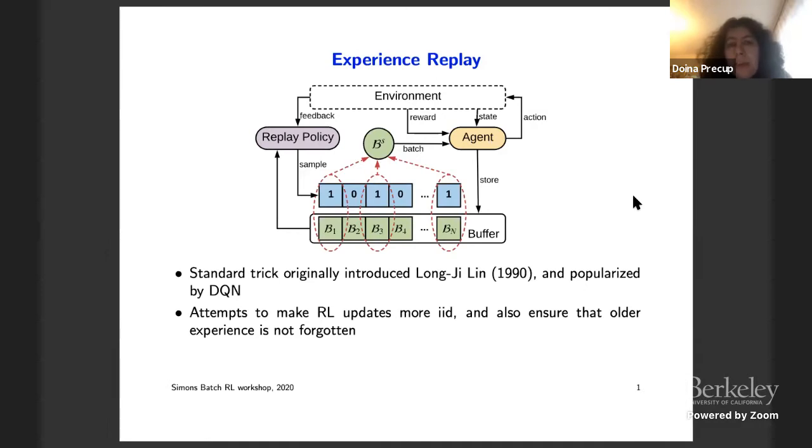In some sense, this is a trick that was initially introduced by Long Jiren back in 1990. He was a roboticist, and he just wanted to make sure that data did not get lost because it's very expensive to produce. And also, he wanted to make sure that if his robot somehow happened upon a really good trajectory, that it would use that trajectory sufficient amount of time to really learn from it. The trick was popularized, really, by DQN.